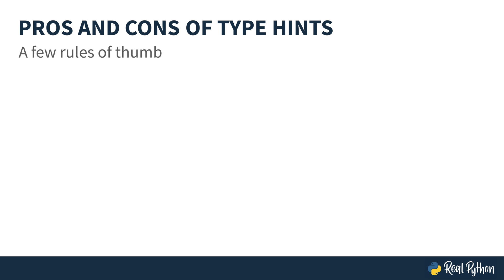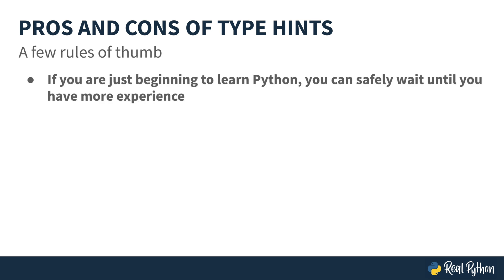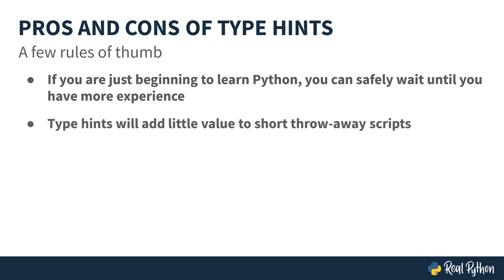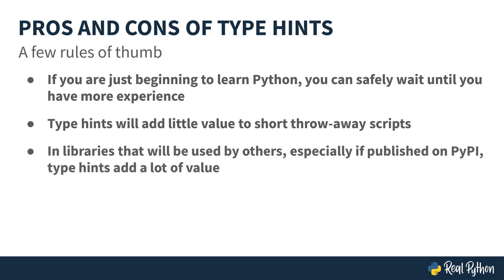So here's a few rules of thumb. If you're just beginning to learn Python, you can safely wait until you have more experience before you start adding type hints to your code. Type hints are not going to add much value to short or throwaway scripts. On the other hand, in libraries that will be used by others — especially if you're going to be published on PyPI — type hints are going to add a lot of value, as other code using your libraries needs these type hints to be properly type checked.